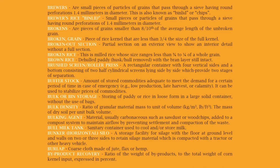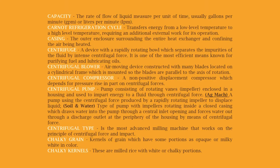Bull milk tank: a sanitary container used to cool and/or store milk. Bunker: a horizontal silo, a storage facility for silage with the floor at ground level and walls on two or three sides to retain silage material, which is compacted with a tractor or other heavy vehicle. Burlap: coarse cloth made of jute, flax, or hemp. Byproduct recovery: the ratio of the weight of byproducts to the total weight of corn kernel input, expressed in percent.